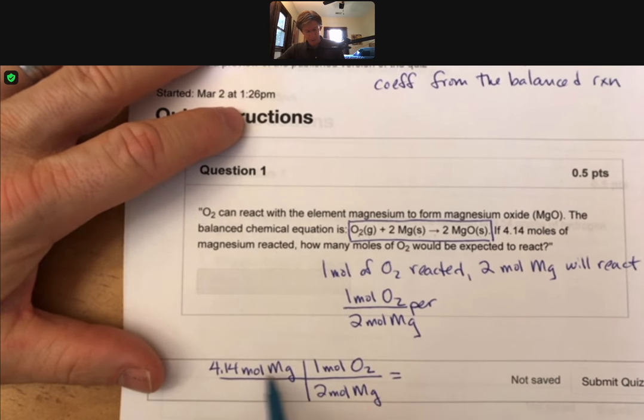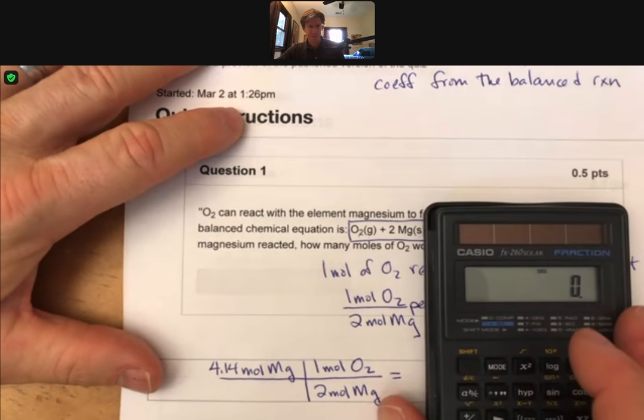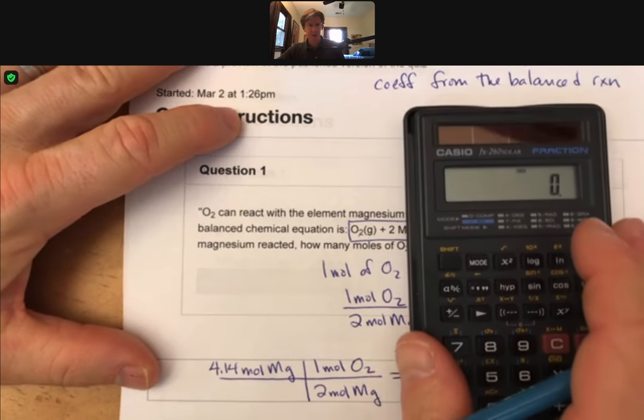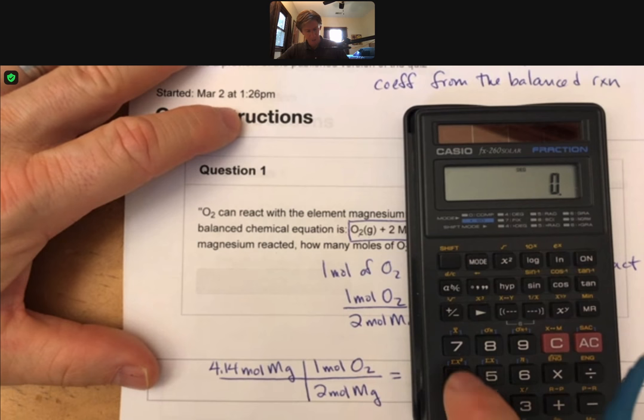Then we can multiply across, divide by the numbers that are on the bottom. If we do, we get 4.14 divided by 2.